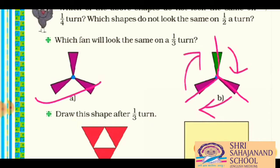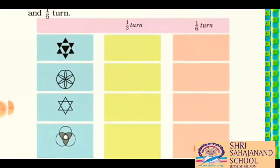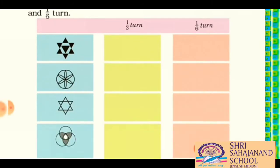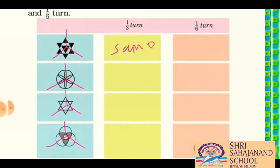It is just like one-sixth turn. Now let's come to the practice time and find the one-third turn of these pictures. To find the one-third turn, we have to divide all shapes into three equal parts. In one-third turn you can see that the small triangles — the outer is triangles and the inner is also a triangle — are just looking the same in one-third turn. So here you can draw the same picture, because it will look the same in one-third turn.